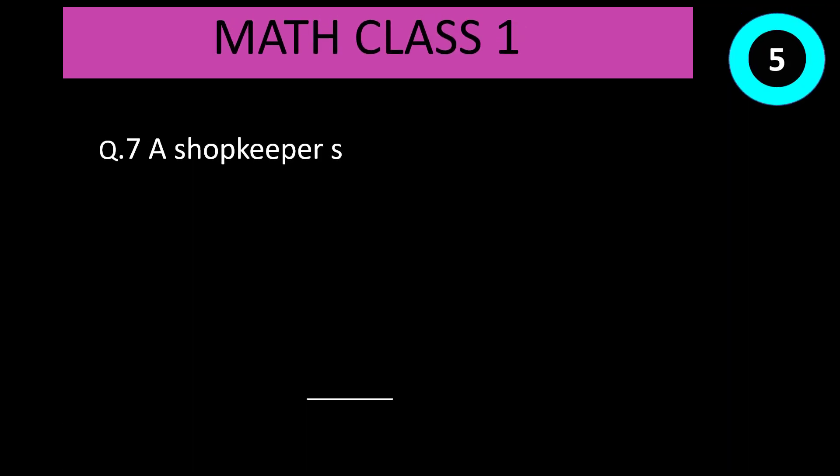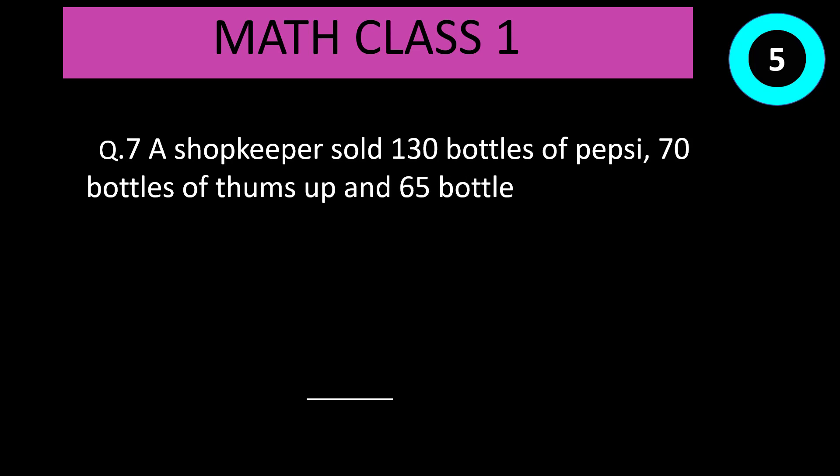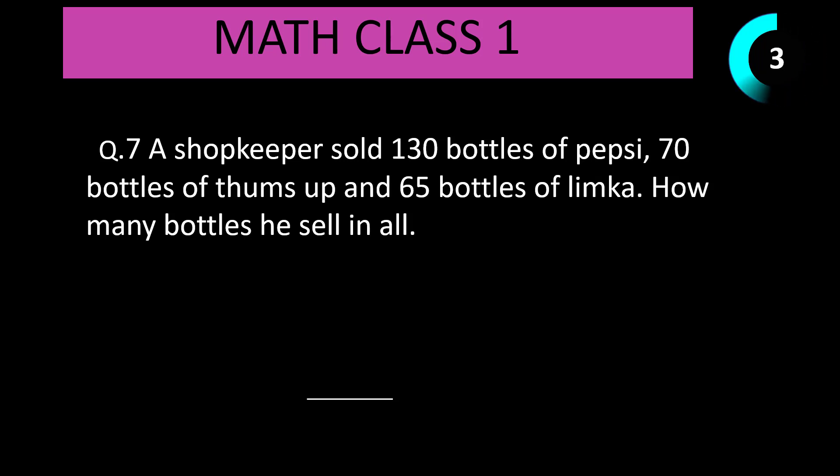Question number 7: A shopkeeper sold 130 bottles of Pepsi, 70 bottles of Thumbs Up, and 65 bottles of Limca. How many bottles did he sell in all? Time start now. Correct answer is 130 plus 70 plus 65 equal to 265.